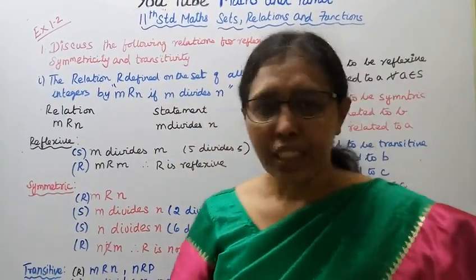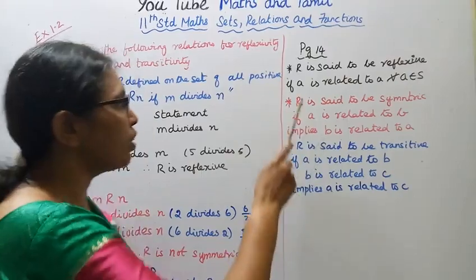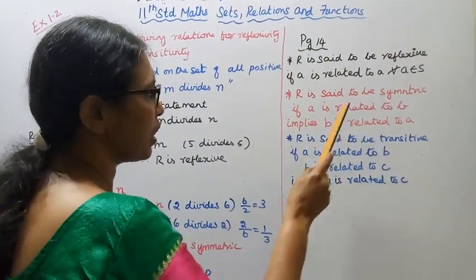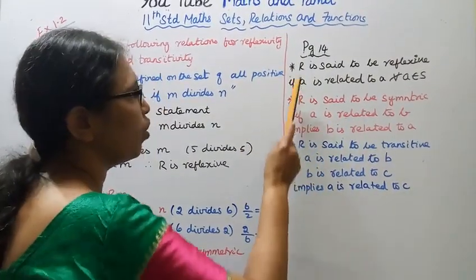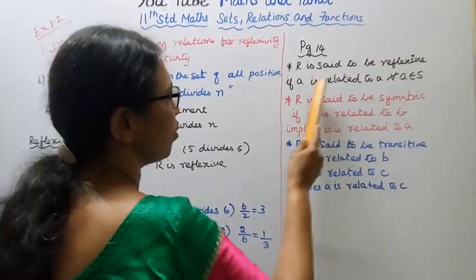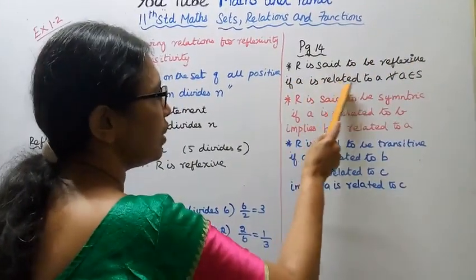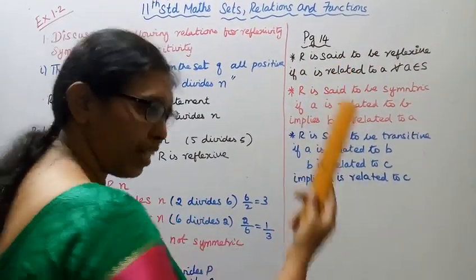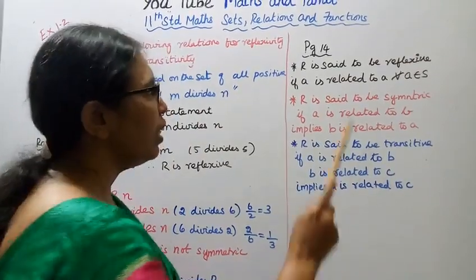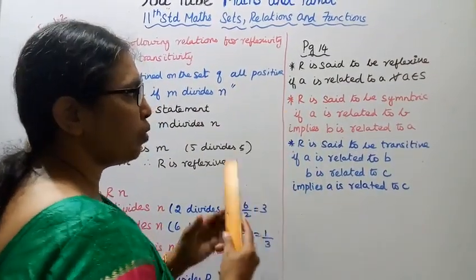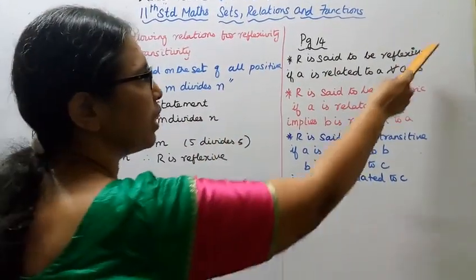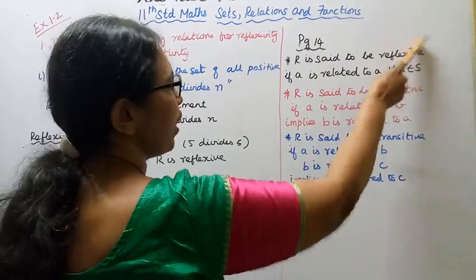We will check for reflexive, symmetric, and transitive properties. R is said to be reflexive if A is related to A — that is, A is related to itself. Every element is related to itself, so that is the reflexive condition.